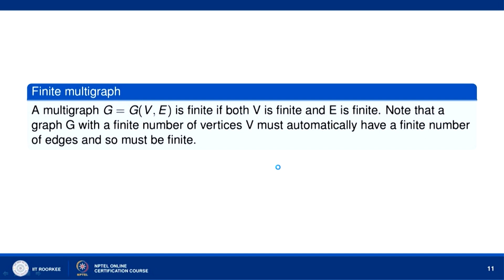A multigraph is said to be finite if both the set of vertices and the set of edges are finite. Note that if there are only a finite number of vertices in the graph then it must also have a finite number of edges, because when vertices are finite, joining them yields only finitely many edges. So a multigraph is called finite if the number of vertices is finite.